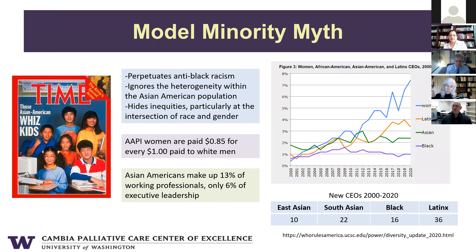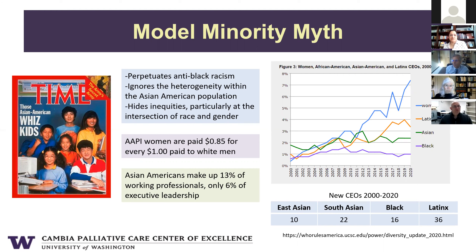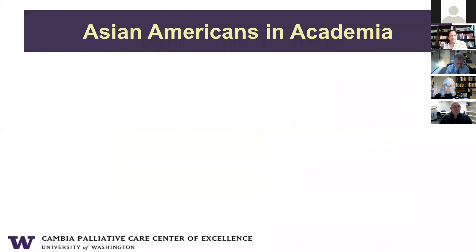We can see some of that in this figure looking at CEOs of Fortune 500 companies. You can see all women CEOs in blue, and then the breakdown in terms of Latinx, Asian, and Black CEOs between 2000 and 2020. There were 10 East Asian, 22 South Asian, 16 Black, and 36 Latinx CEOs. I want to point out that the y-axis only goes up to 7 or 8% — in other words, 90% of CEOs are white men. Asian Americans make up 13% of working professionals but only about 2% of CEOs.